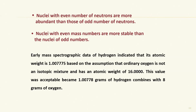Nuclei with even mass numbers are more stable than nuclei with odd mass numbers — that is an important physical property. Early mass spectrographic data of hydrogen indicated its atomic weight is approximately 1.007775 AMU. This was based on the assumption that ordinary oxygen is not an isotopic mixture and has an atomic weight of 16. People thought oxygen was very pure under any circumstances, so they took oxygen as a standard to measure the weight of all other elements.